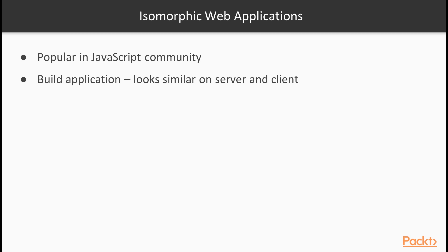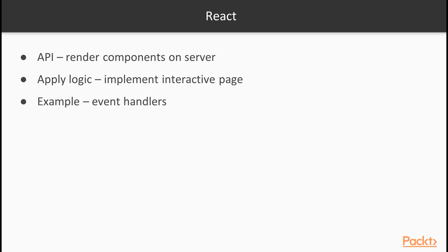With React in particular, the concept of isomorphic web applications became very popular within the JavaScript community. Writing an isomorphic application means building an application that looks the same on the server and the client. React brings the concept a step further, giving us a simple API to render our components on the server and transparently applying all the logic needed to make the page interactive — for example, event handlers in the browser.